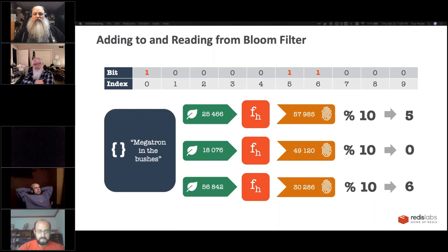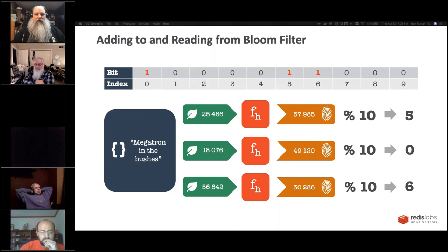If we want to check whether 'Megatron in the bushes' is in the bloom filter, we go through the exact same process. We get our five, zero, and six back. Then we look at all those bits and ask: are they all set to one? If they're all set to one, 'Megatron in the bushes' is probably in the bloom filter. If they're not all ones, then it's definitely not in the bloom filter.